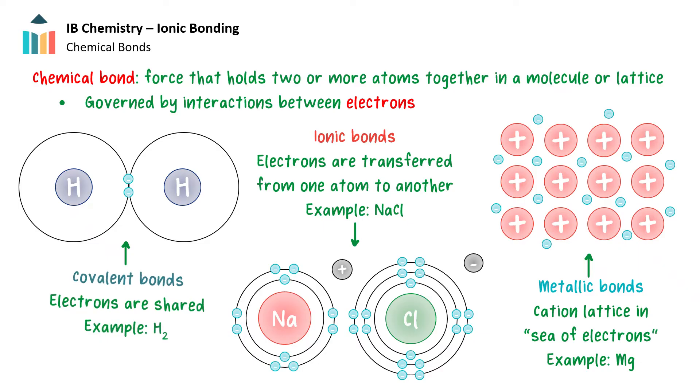Chemical bonds can be covalent, ionic, or metallic, depending on the type of atoms involved in the bond and the way in which they interact. Covalent bonds involve the sharing of electrons between atoms, while ionic bonds are characterized by the transfer of electrons from one atom to another.